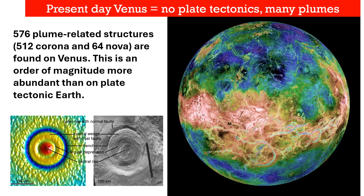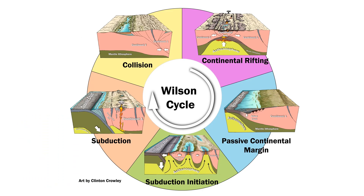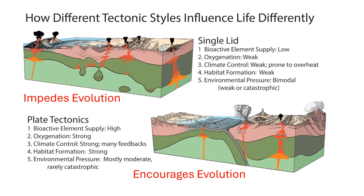Almost 600 plume-related structures are found on single-lid Venus compared to some dozens for Earth over the past billion years. Plate tectonics releases internal heat more effectively than does single lid tectonics, decreasing the frequency of sudden plume-related catastrophic tectonomagmatic events that may cause global mass extinctions, replacing it with a gentler, more continuous environmental pressure associated with the Wilson cycle. In this way, plate tectonics stimulates biological evolution much more than does single lid tectonics, making it much more likely that an advanced communicative civilization will emerge on a planet with plate tectonics.